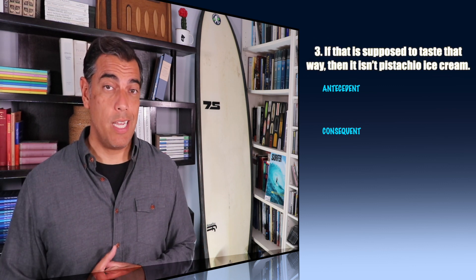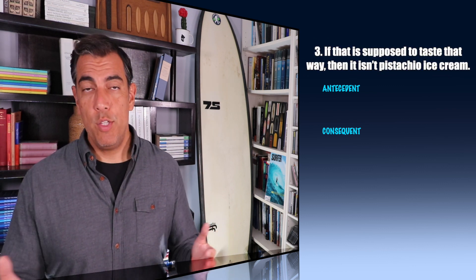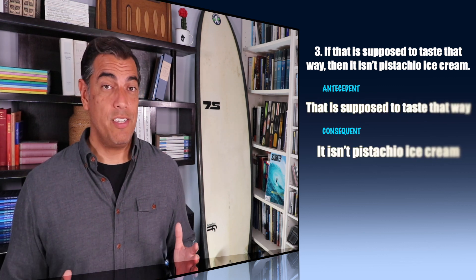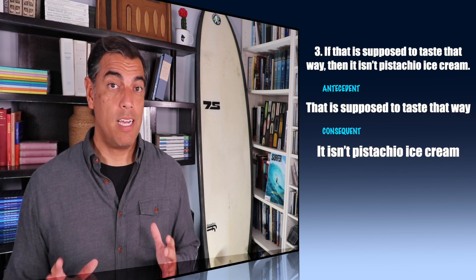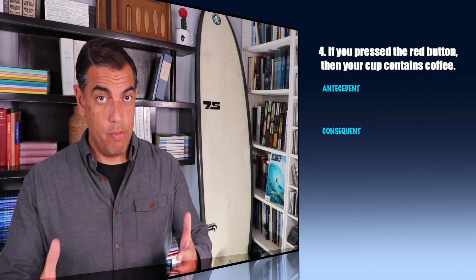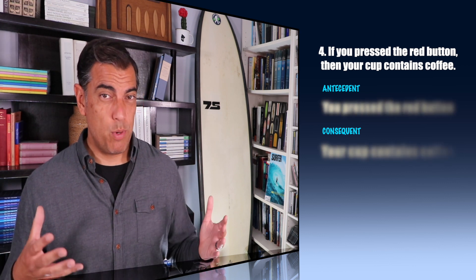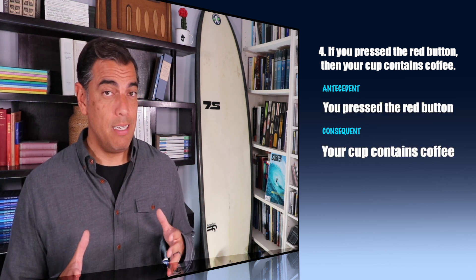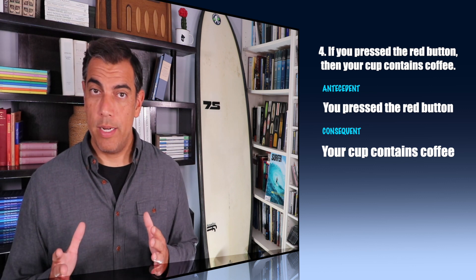Number three: if that is supposed to taste that way, then it isn't pistachio ice cream. This one is pretty straightforward. The antecedent is 'that is supposed to taste that way,' the consequent is 'that isn't pistachio ice cream.' Number four: if you press the red button, then that is coffee in your cup. This is another straightforward if-then statement. The antecedent is 'you press the red button,' the consequent is 'that is coffee in your cup.'